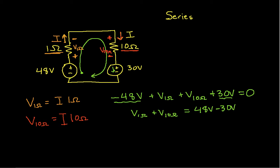Okay, now I can plug in my expression for V1 ohm. This is I times 1 ohm. And my expression for V10 ohms. This is I times 10 ohms. And this other part stays the same.